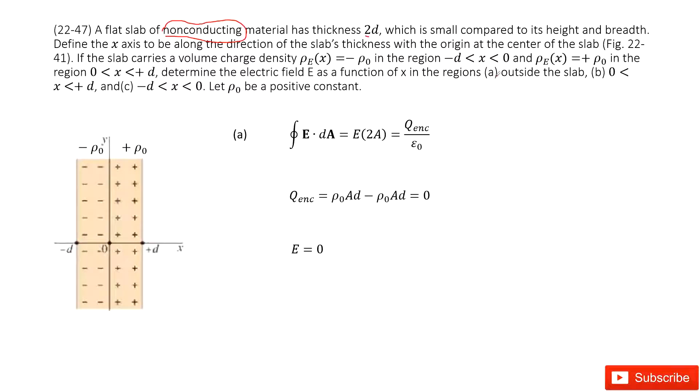For the first part, we need to determine the electric field outside of this object. Therefore, we can draw a Gaussian surface with cross-sectional area A. So this is A, and this is another A.